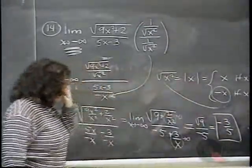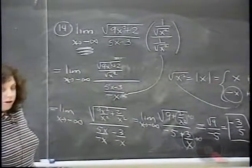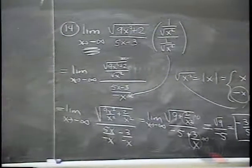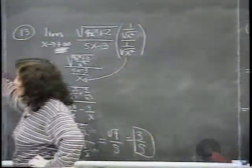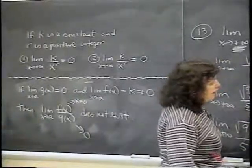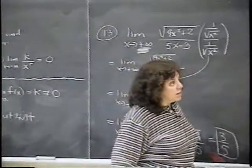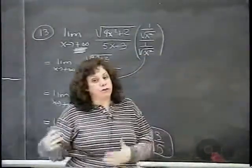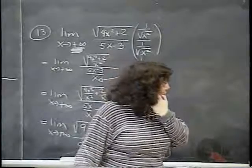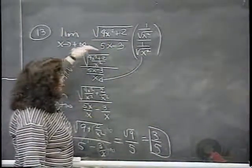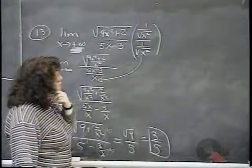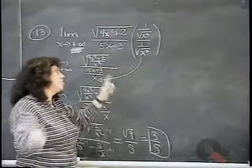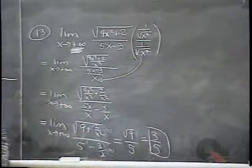To summarize when the sign matters for limits at infinity: most of the time the answer is unaffected by approaching +∞ vs. −∞, as long as only k/xʳ terms are involved. However, two exceptions arise: first, when the bottom goes to zero and the top doesn't after dividing, requiring a testing value whose sign can differ; second, when a radical expression is involved and √(x²) = |x| must be replaced by +x or −x depending on the direction of approach. That brings us to the end of this tape.